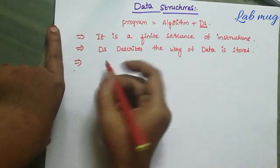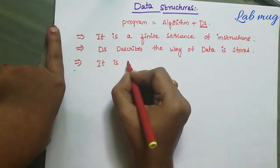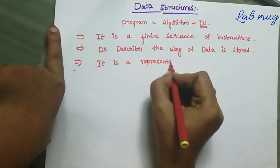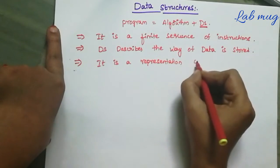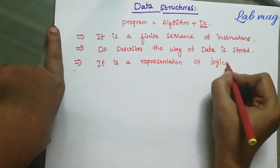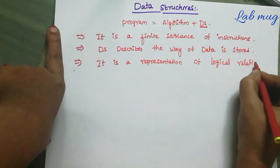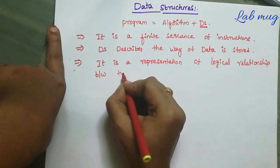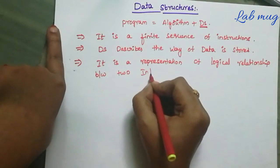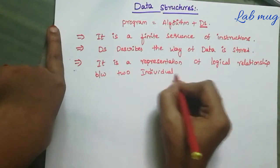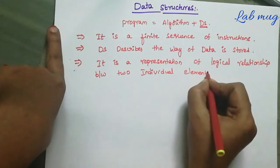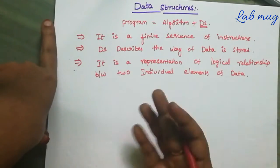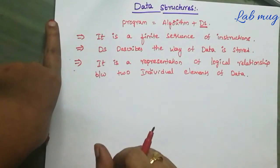But the main definition of data structure is: it is a representation of logical relationship between two individual elements of data. So two data elements thishkuunate, manam a two elements maddi lo unna relationship ni manam nirle ga encha ceppa edha anandu - data structure anandu cheppa.